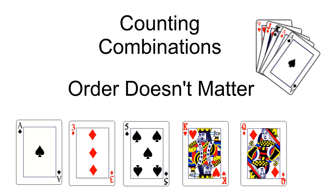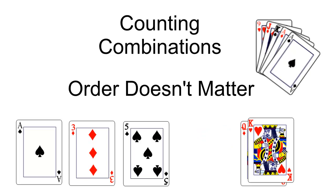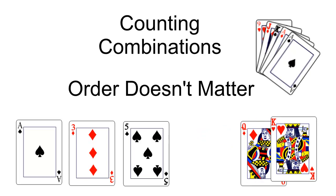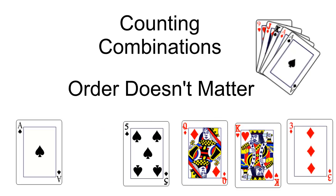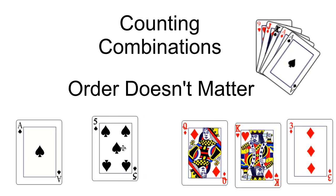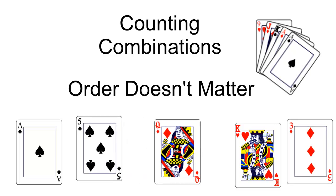More realistically though, when we're dealing with cards we don't care what order we're dealt the cards. It may affect how we play them, but it doesn't affect how we score them, and so this combination is exactly the same as that combination.